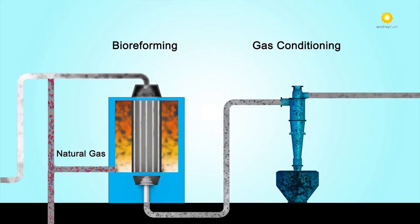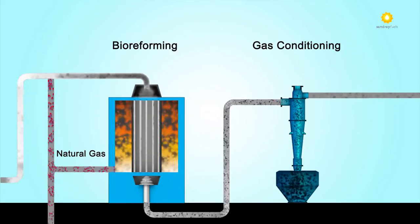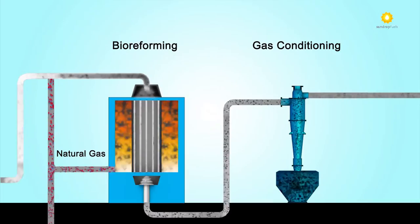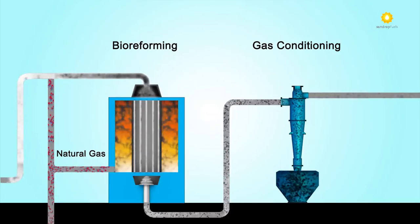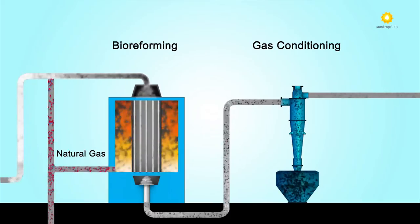The balance of the natural gas is used to fire the high temperature furnace, heating the biomass to very high temperatures in the Sundrop Fuels proprietary ultra high temperature reactor tubes.